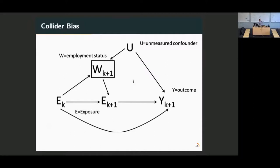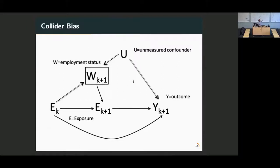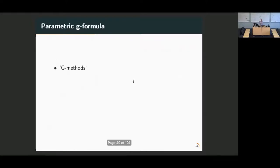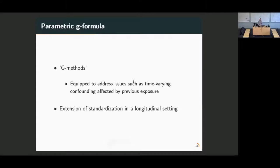What this does is induce what is called collider bias. That's when two arrows meet at the same variable and you control for that variable. That opens what used to be a closed path between exposure and employment status and the unmeasured confounder going to the outcome. By trying to deal with confounding, we're inducing a different kind of bias, which now is also affecting our ability to identify the effect of interest. That's why we cannot use traditional regression approaches to deal with this issue. But what we can use is one of a collection of methods that are called G-methods, and they are equipped to address an issue such as time-varying confounding affected by previous exposure.